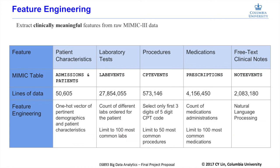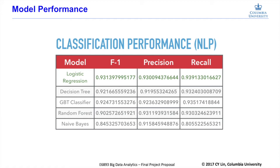For feature engineering, we showed how much data came from those five tables and discussed what kind of feature engineering was performed for each table, as listed in our project report. In terms of model performance, we evaluated on 25% held-out unseen testing data. We found logistic regression with a regularization penalty performed best, with an F1 measure of 0.93, with similar precision and recall.